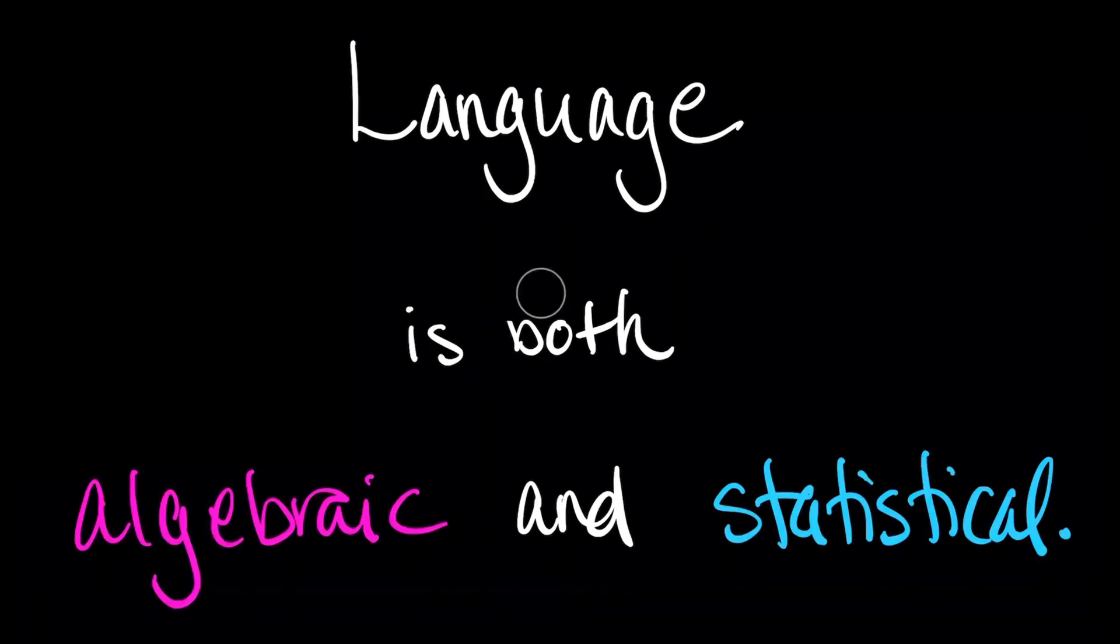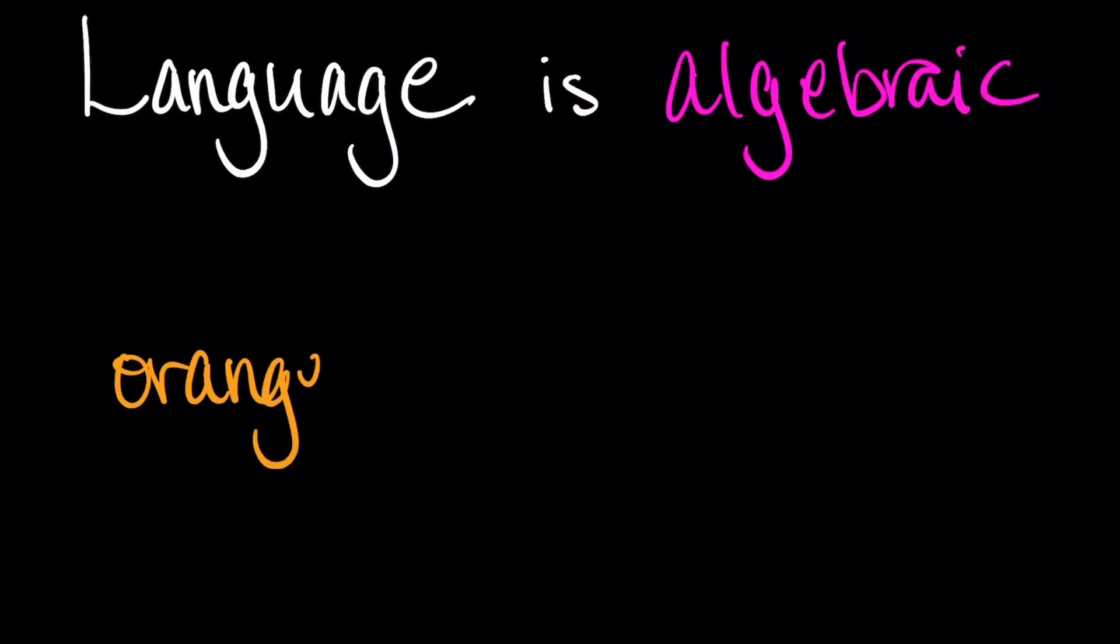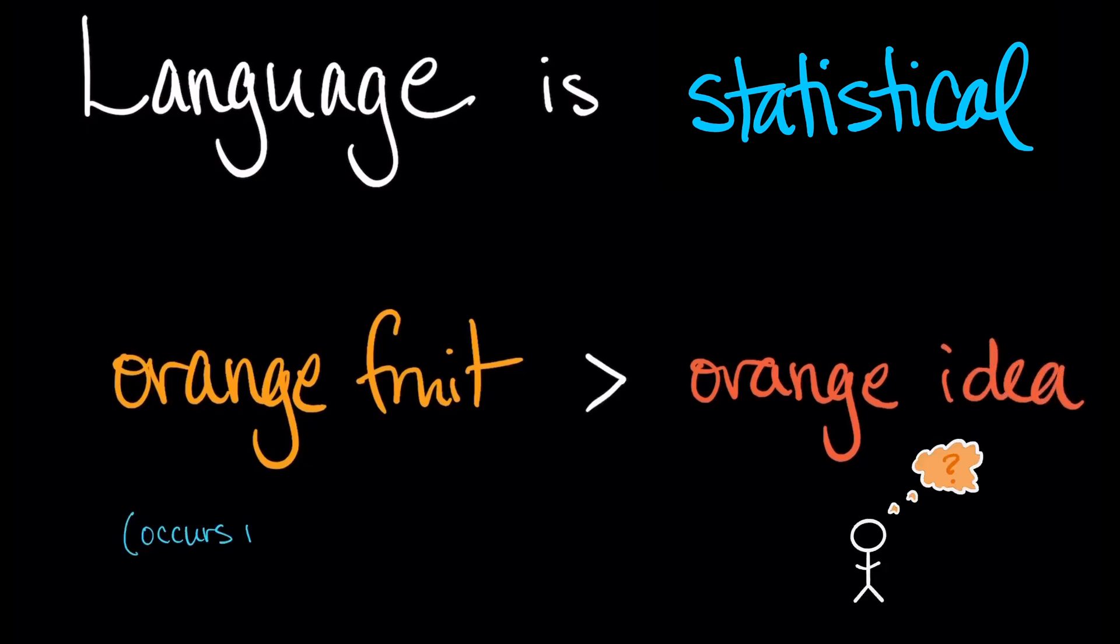Language is algebraic since words come together to form larger expressions. Orange is a word, fruit is a word, and I can concatenate them to get orange fruit. But language is also statistical since some expressions occur more frequently than others. Orange fruit occurs more frequently than orange idea, and that contributes something to the meanings of these expressions. And the probability of someone saying I have an orange fruit is much higher than saying I have an orange idea.